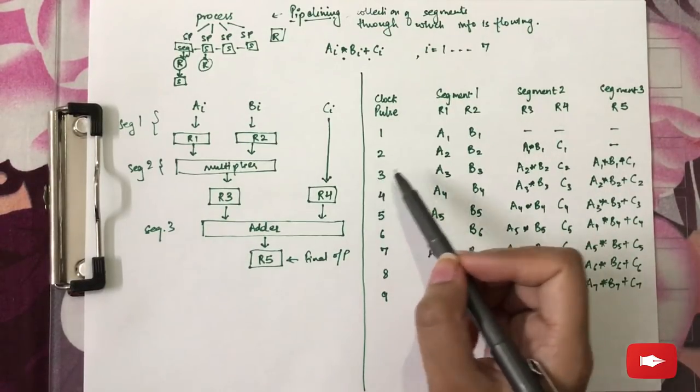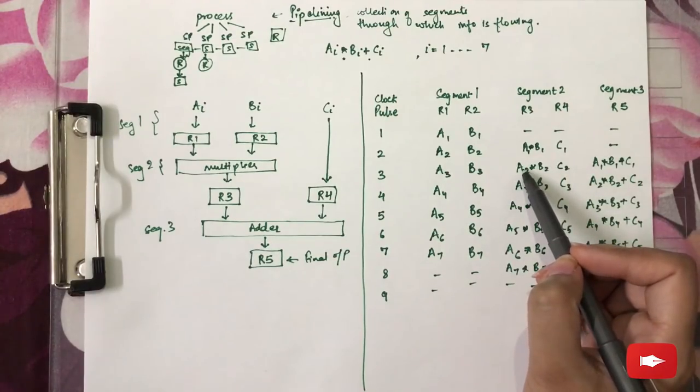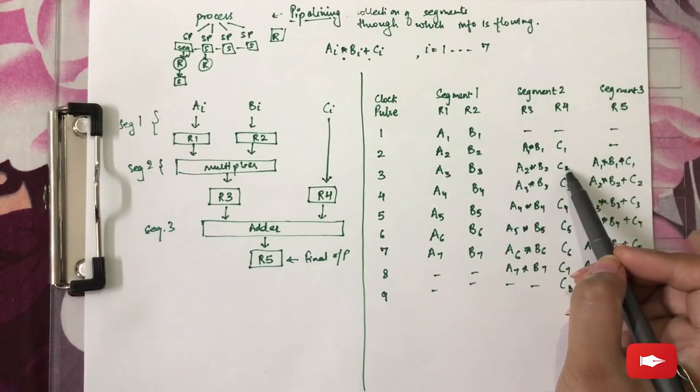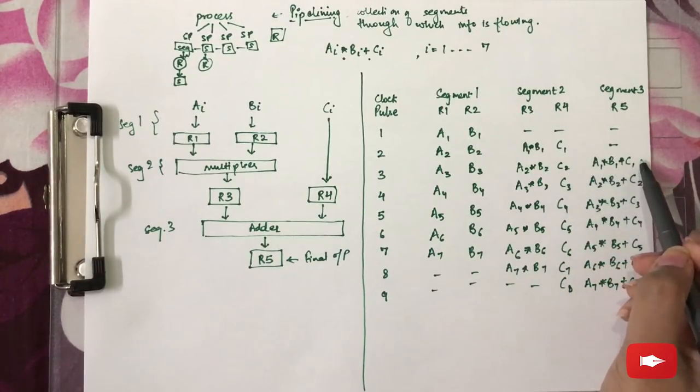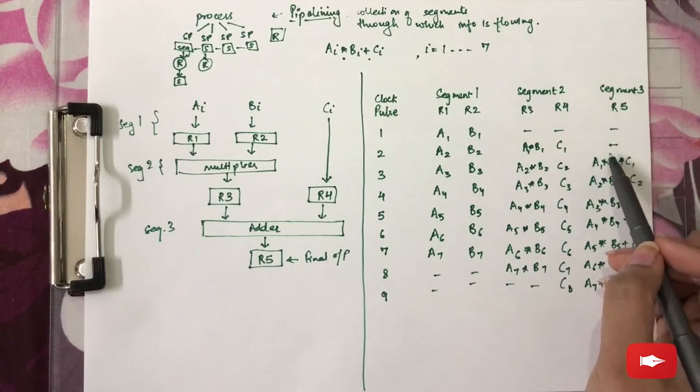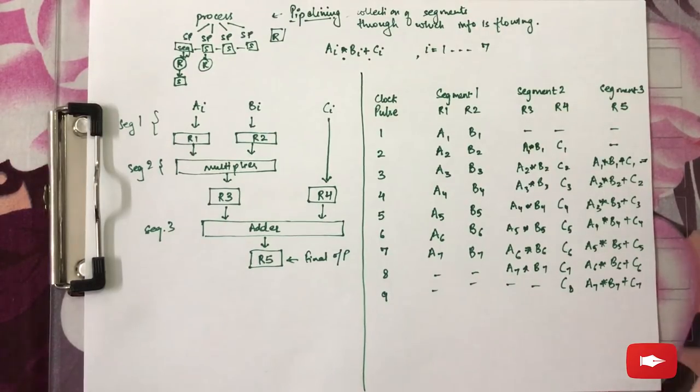During the third clock pulse, the third bit was loaded here. The second bit was multiplied and the second bit was loaded here. Plus the first bits of all the three operands were being operated and the final result was obtained here.